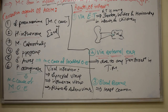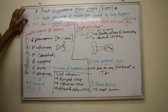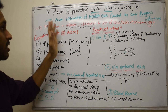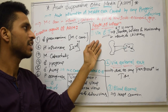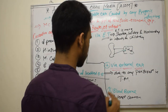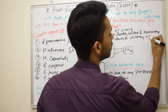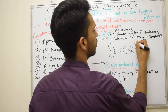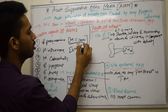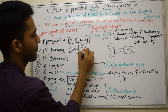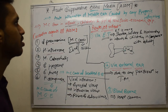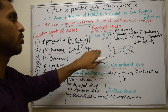So this is the introduction and definition of acute suppurative otitis media — it is acute inflammation of the middle ear caused by any pyogenic infections. It is most commonly seen in infants and children because the Eustachian tube is shorter, wider, and more horizontal in infants compared to adults. Causative agents include Streptococcus pneumoniae, Haemophilus influenzae, Staph aureus, Pseudomonas aeruginosa, and many other viruses.